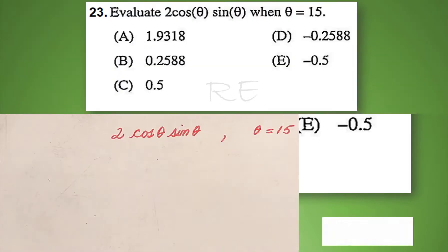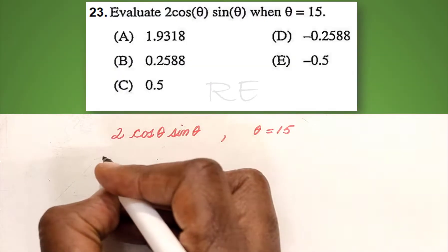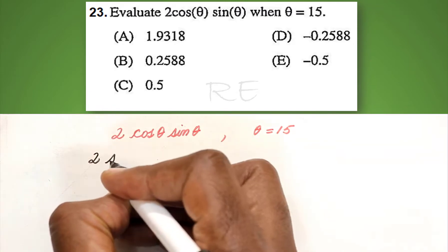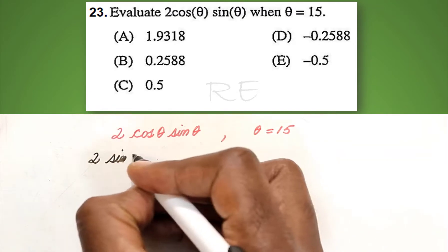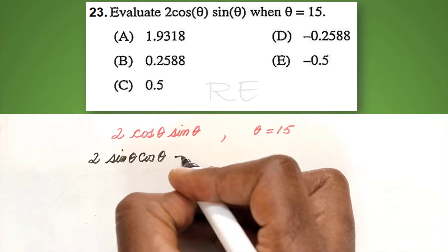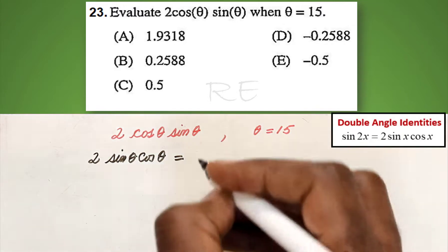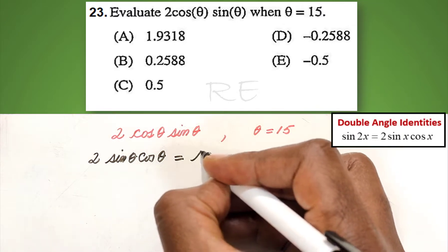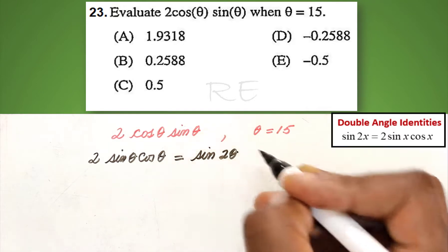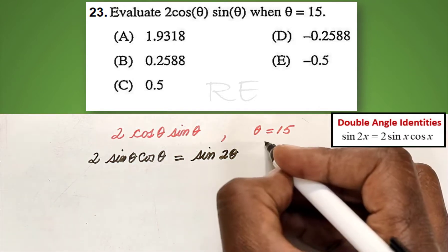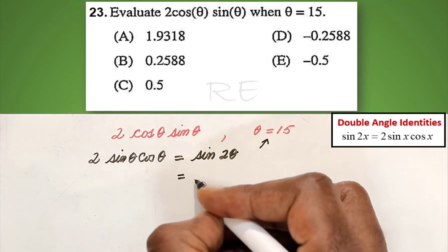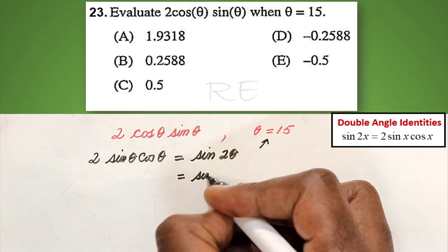Evaluate 2 cosine theta sine theta when theta is equal to 15. Multiplication is commutative, so 2 cosine theta times sine theta can be written as 2 sine theta times cosine theta. Using double angle identities, this can be written as sine 2 theta, where theta is equal to 15.